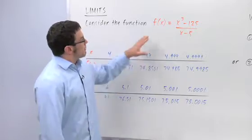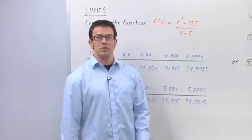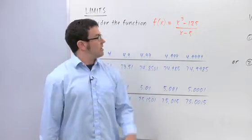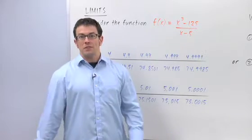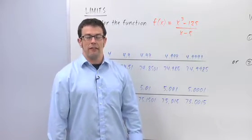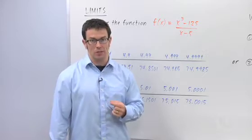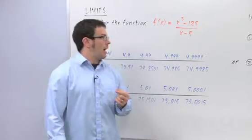Let's start with a function, f of x equals x cubed minus 125 over x minus 5. Now you'll notice that this function's not defined at x equals 5, but we can still figure out what happens near x equals 5, and that's what limits are all about.